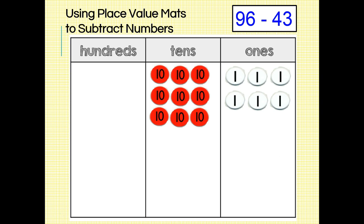Now we are ready to subtract our subtrahend, which is 43. So I will cross out four tens disks and three ones disks. What are we left with? That's right, five tens disks and three ones disks. 96 minus 43 equals 53.